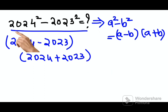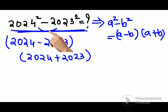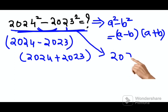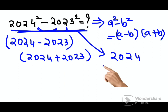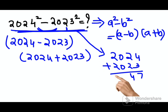Whenever you have something in this format and the difference between the two numbers is one, you can directly write down your answer as nothing but the sum — 2024 plus 2023. The answer is 4047.